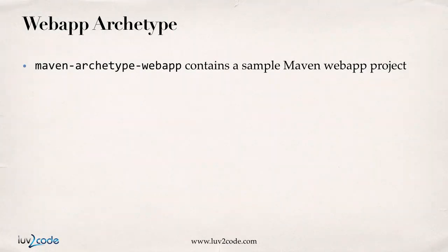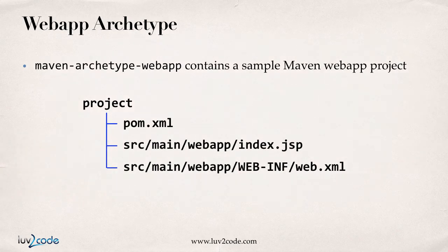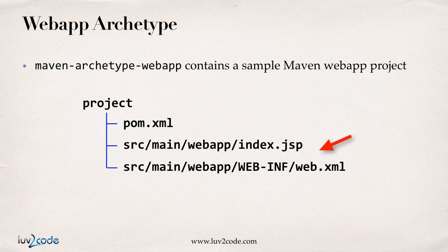Let's look at the web app archetype. This archetype contains a sample Maven web app project, so if you're building a web project, use this archetype to get started. It'll create your project directory, give you a basic pom.xml, create a basic JSP file, and a web.xml. These are just starter files — you'll add your own custom development to them, but it gives you basic structure to help get started. Those are the two most commonly used archetypes.